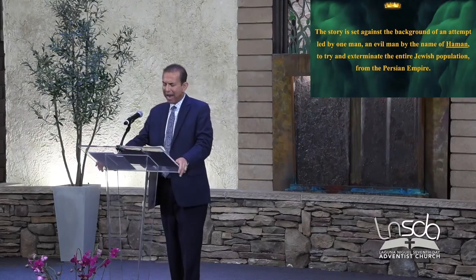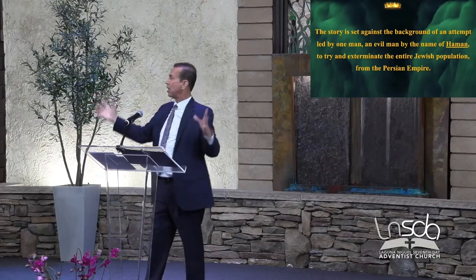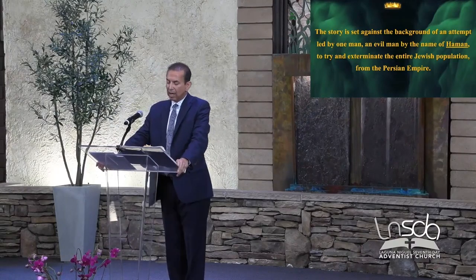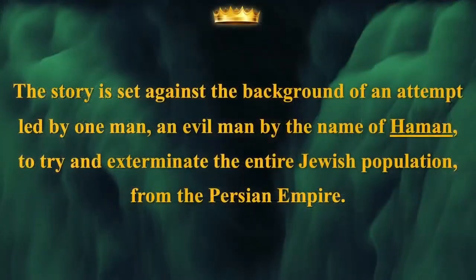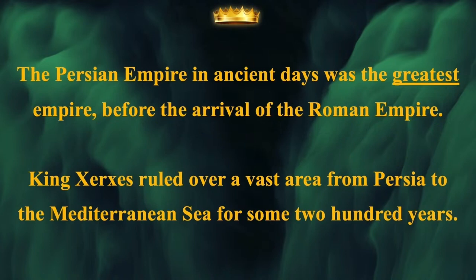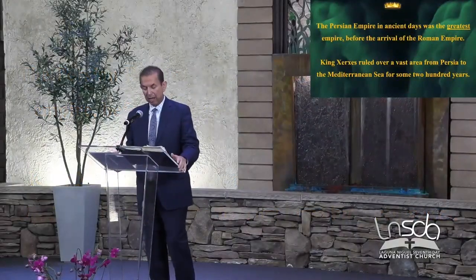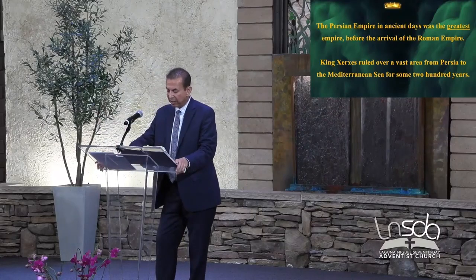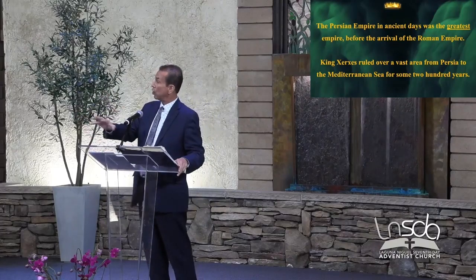The story is set against the backdrop of an attempt by one evil man — his name was Haman — to exterminate the entire Jewish population from the Persian Empire, which stretched from Persia all the way to the Mediterranean. The Persian Empire was the greatest empire before the arrival of the Roman Empire, and King Xerxes ruled over this vast area. If you were studying Daniel, Ezra, or Nehemiah, you'd discover they all relate to this particular time period and geography as well.